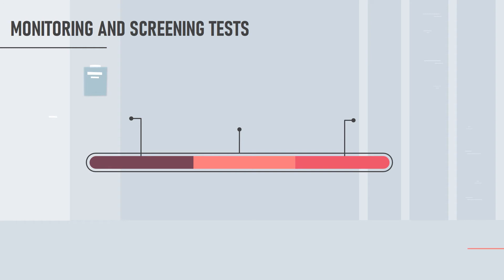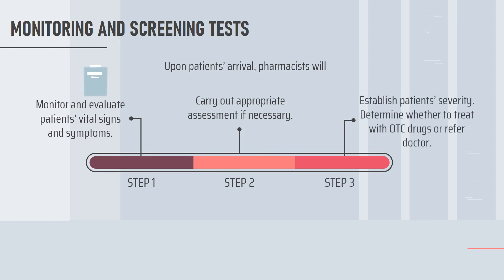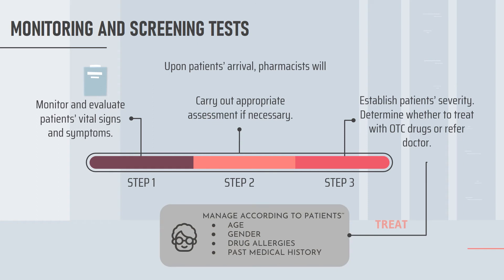Next, monitoring and screening tests. Upon patients' arrival, pharmacists will monitor and evaluate patients' vital signs and symptoms first. Then, step 2: pharmacists will carry out appropriate assessment by asking patients' relevant questions before proceeding to step 3, which is establishing the patient's severity. If the patient's condition is considered mild, OTC medicines can be dispensed to alleviate the symptoms. Conversely, pharmacists will advise the patient to visit the hospital if their condition is severe or when the suitable medicines require a doctor's prescription.